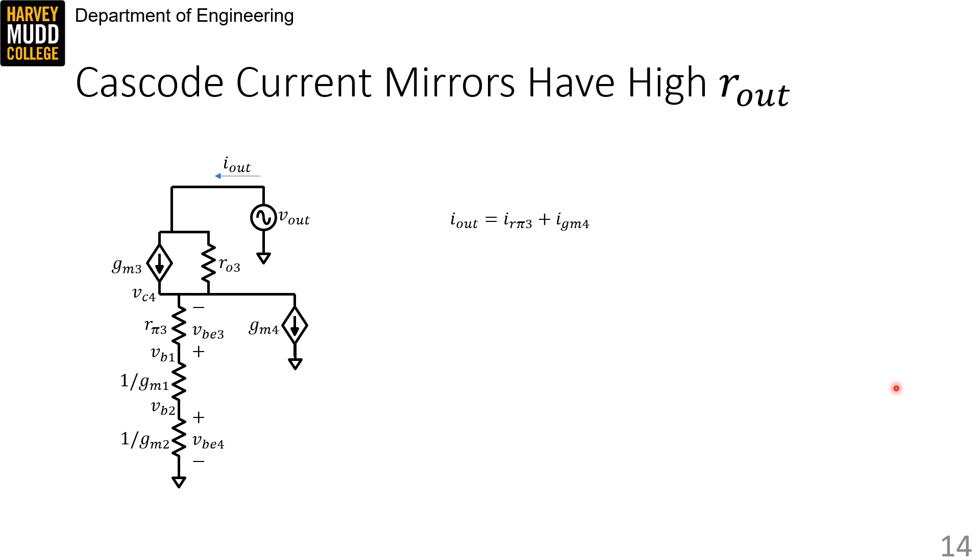Our usual left-right pattern analysis assumes that all of the test current coming out of our test source here flows in our tail resistance. But that isn't true here. Instead, we have this additional GM4 current source that's taking away some of our tail current.